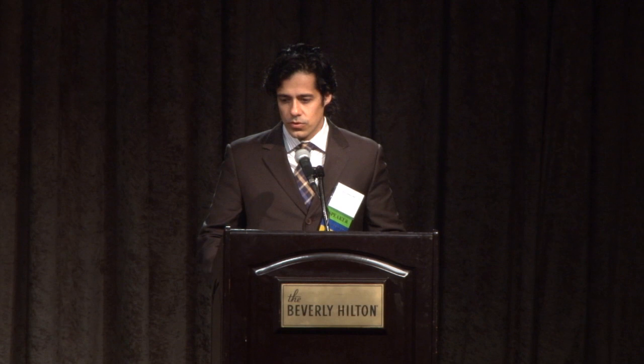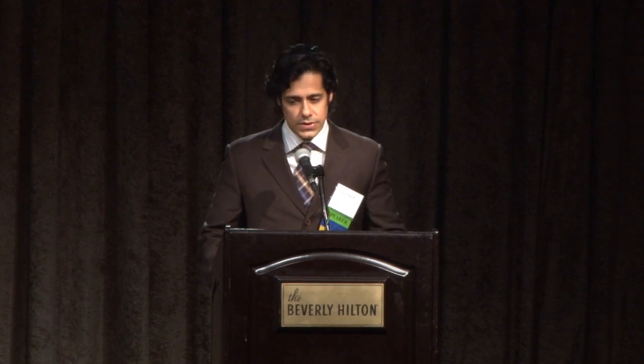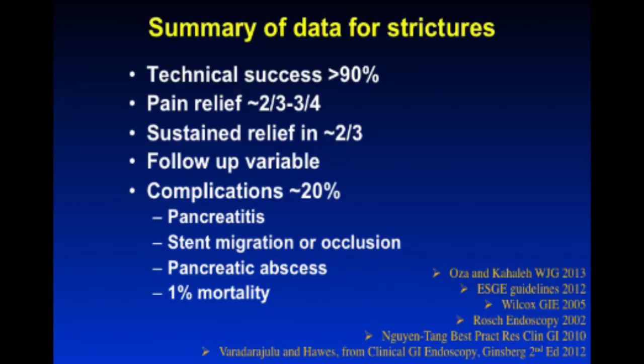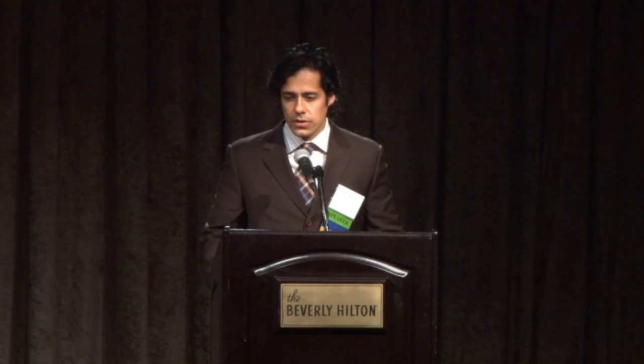Summarizing the world literature on PD strictures: technical success is very high, pain relief is somewhat less but still relatively high, with sustained relief in about two-thirds of patients. Follow-up duration is very variable among studies, which is important to keep in mind. Complications occur in roughly 20%, including pancreatitis, stent migration, and infection, with approximately 1% mortality. These are not necessarily low-risk procedures.